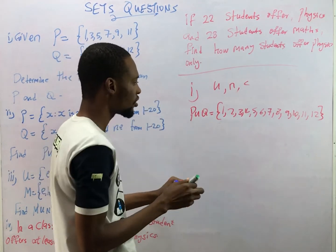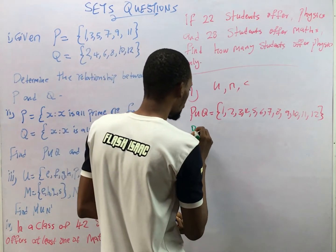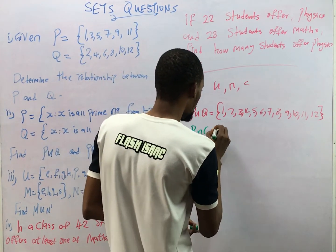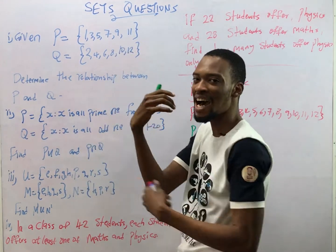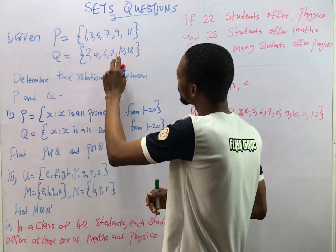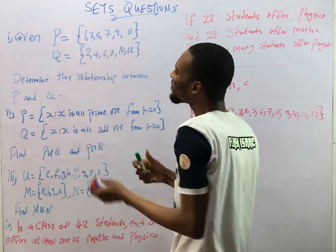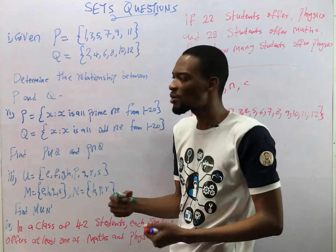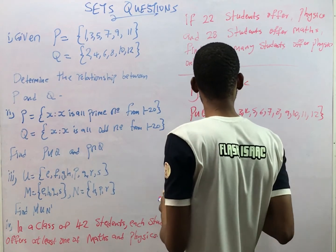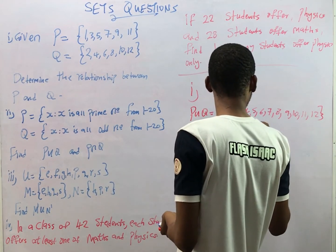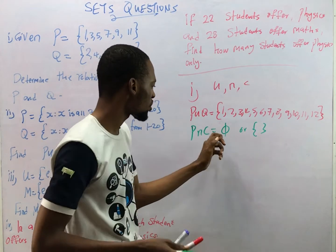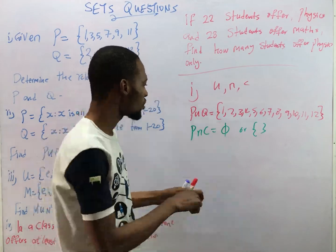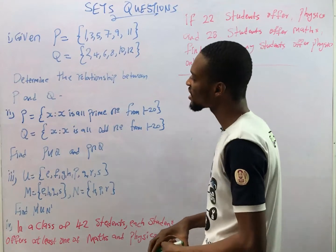So the union goes: 1, 2, 3, 4, 5, 6, 7, 8, 9, 10, 11, 12. That's what union is about — adding two sets without repeating values even if an element appears in both. Now let's look for another relationship: P intersection Q. Intersection means what the sets have in common. These two sets don't have anything in common, so P intersection Q is the empty set.